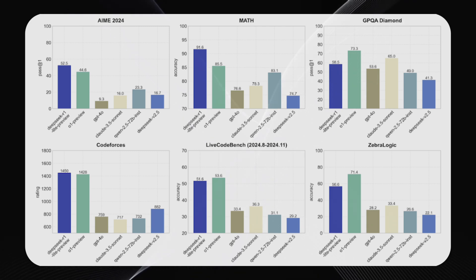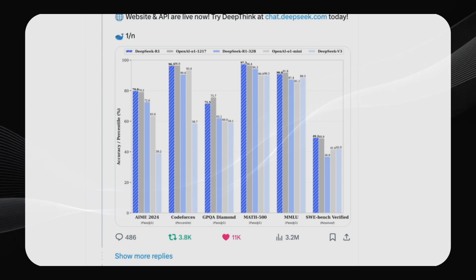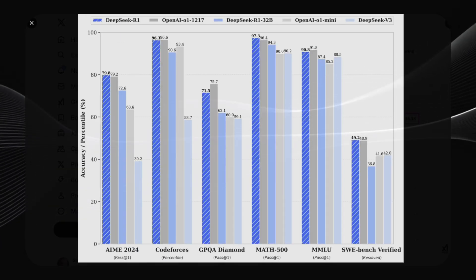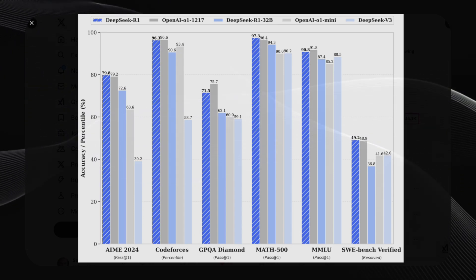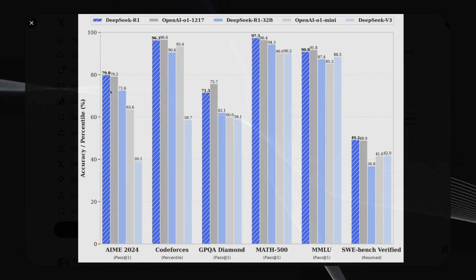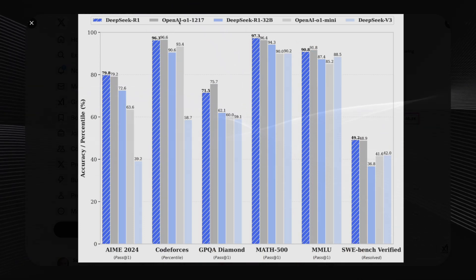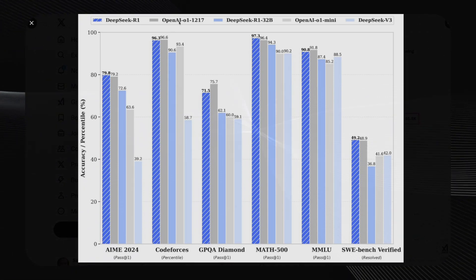But it isn't just about code. DeepSeek R1 also performs great on subjects such as math, logic, and knowledge. On the math benchmark, which measures problem-solving skills in mathematics, DeepSeek R1 scores comparable to, and sometimes better than, O1. Just like on test scores such as GSM8K, which tests grade school mathematics word problems, DeepSeek R1 always performs exceptionally well. Note that these criteria are intended to determine if a model can comprehend abstract concepts, reason, and arrive at the correct answers.